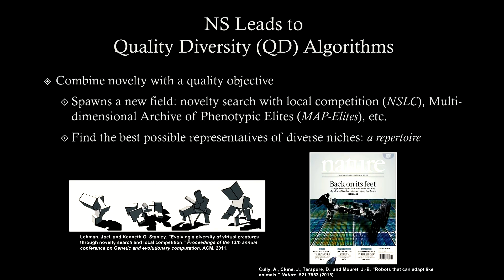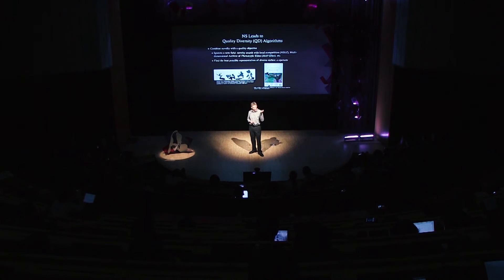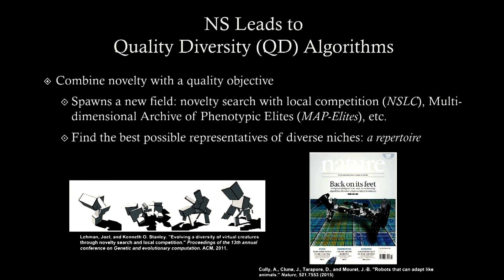This later led to what we're now calling quality diversity algorithms — a new class of algorithms that search for novelty and divergence, but at the same time, within each niche that they find, they try to be as high quality as possible. It combines the idea of diversity with some objective notion of quality, and this led to a whole new slew of algorithms.